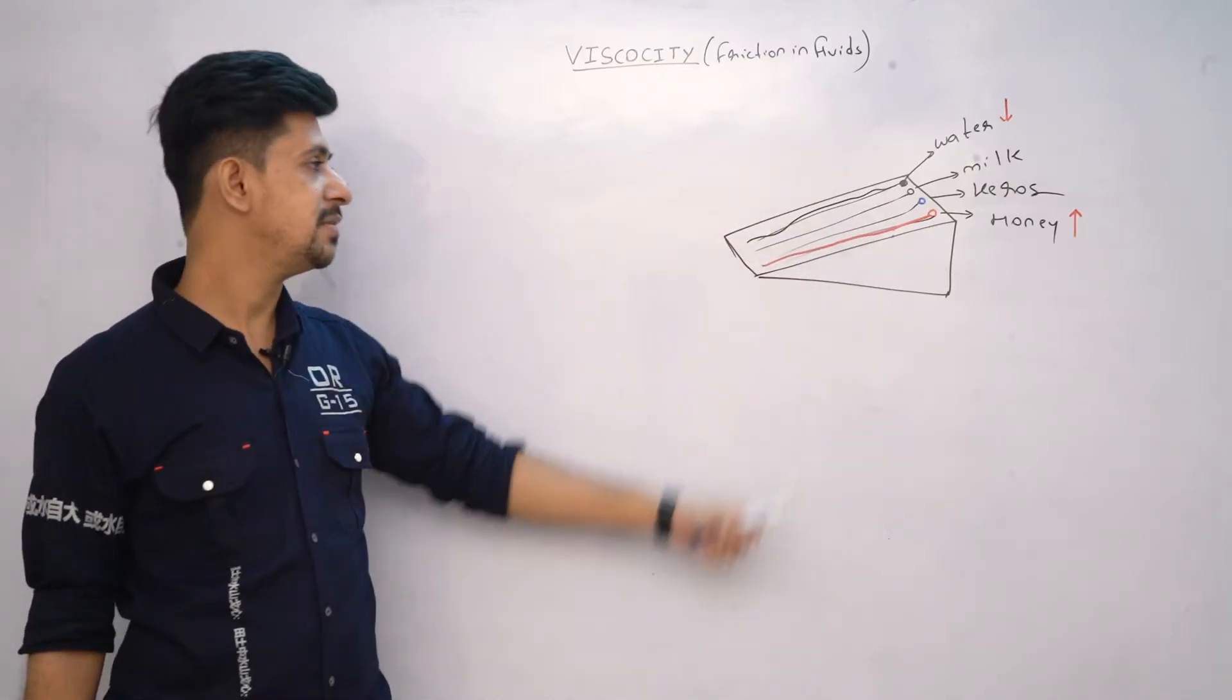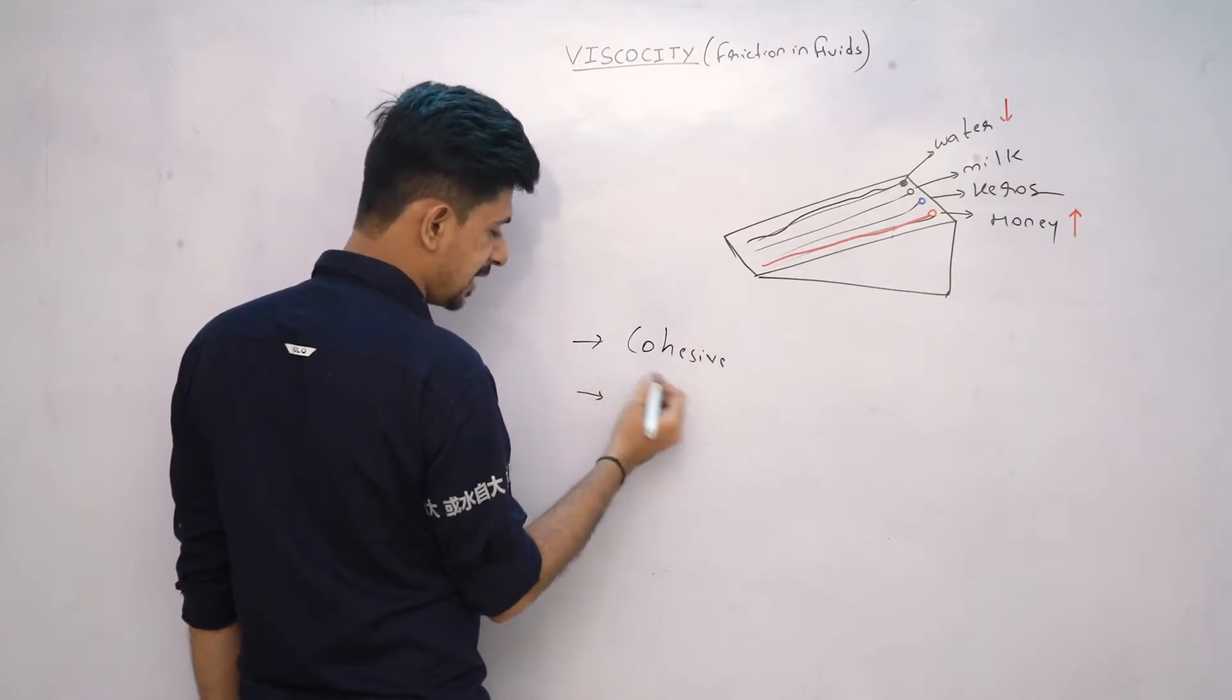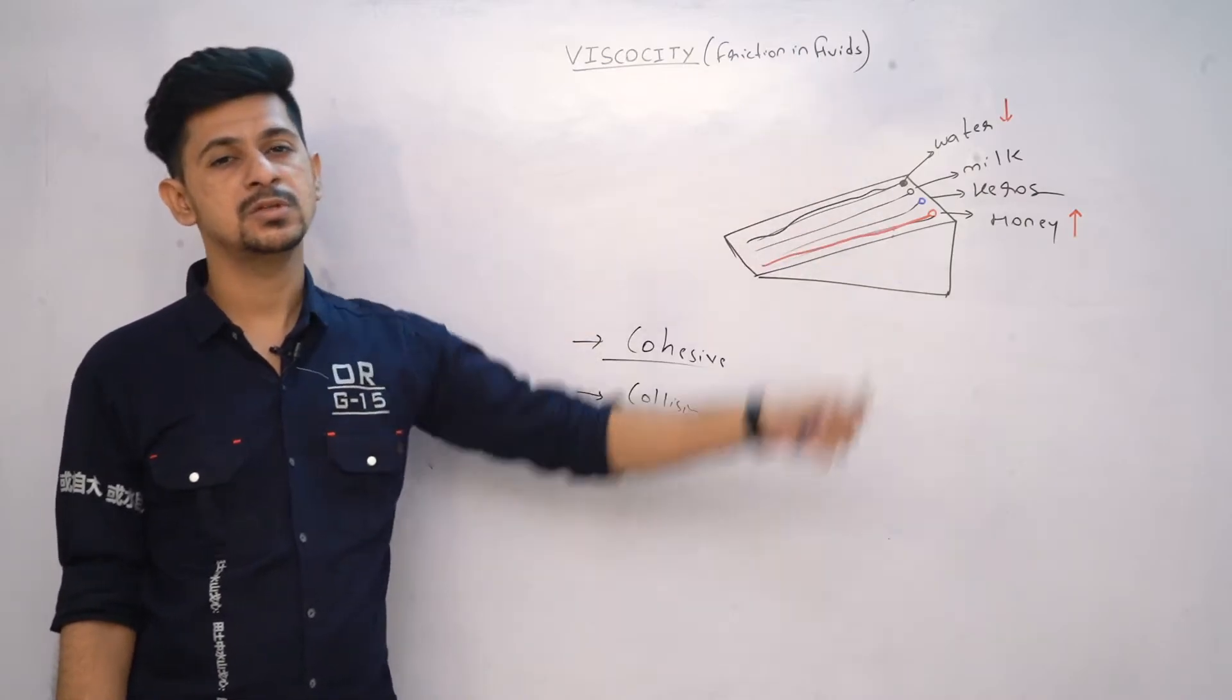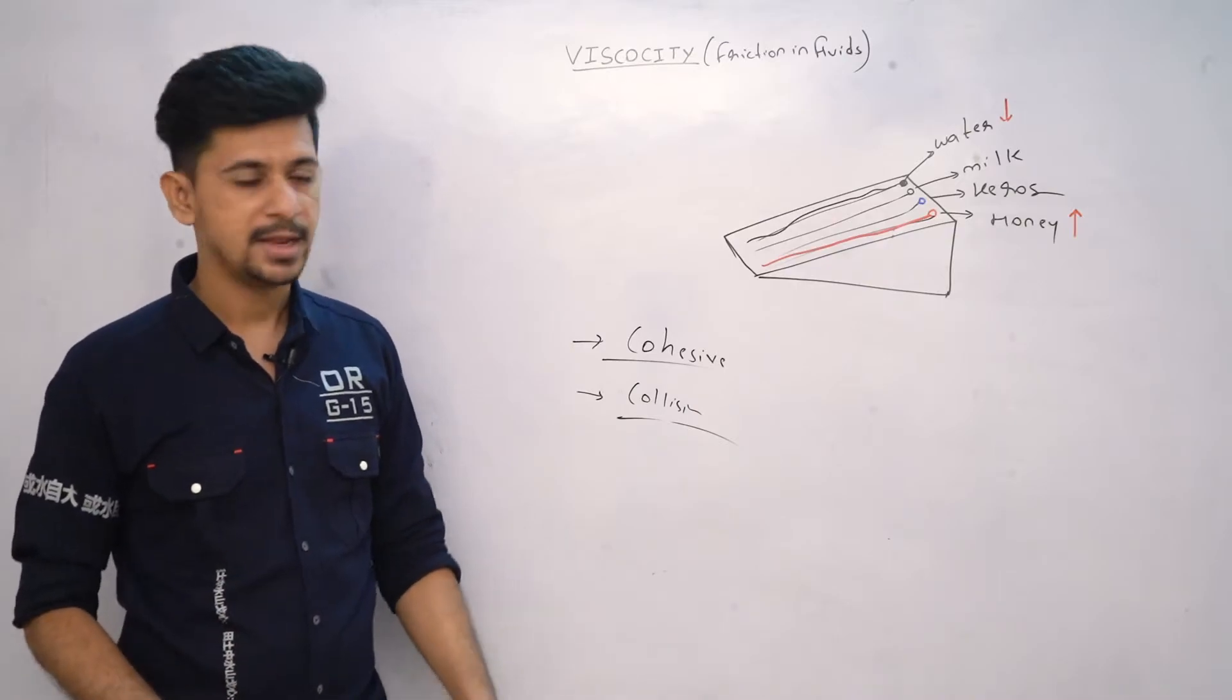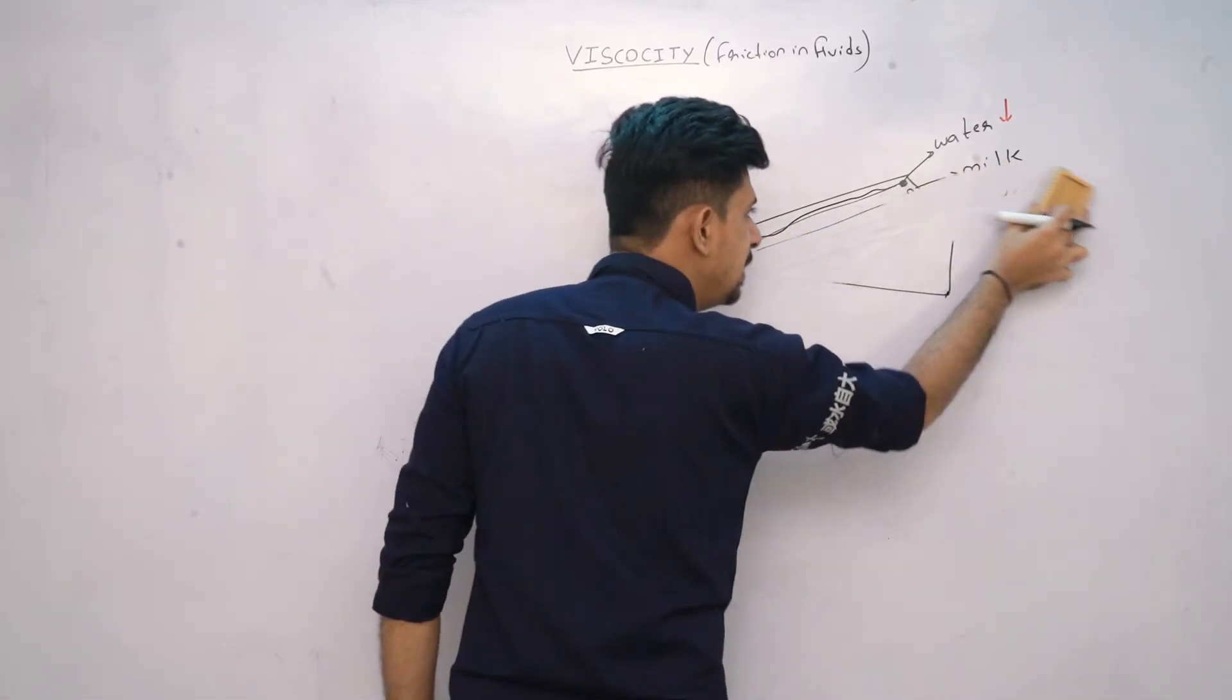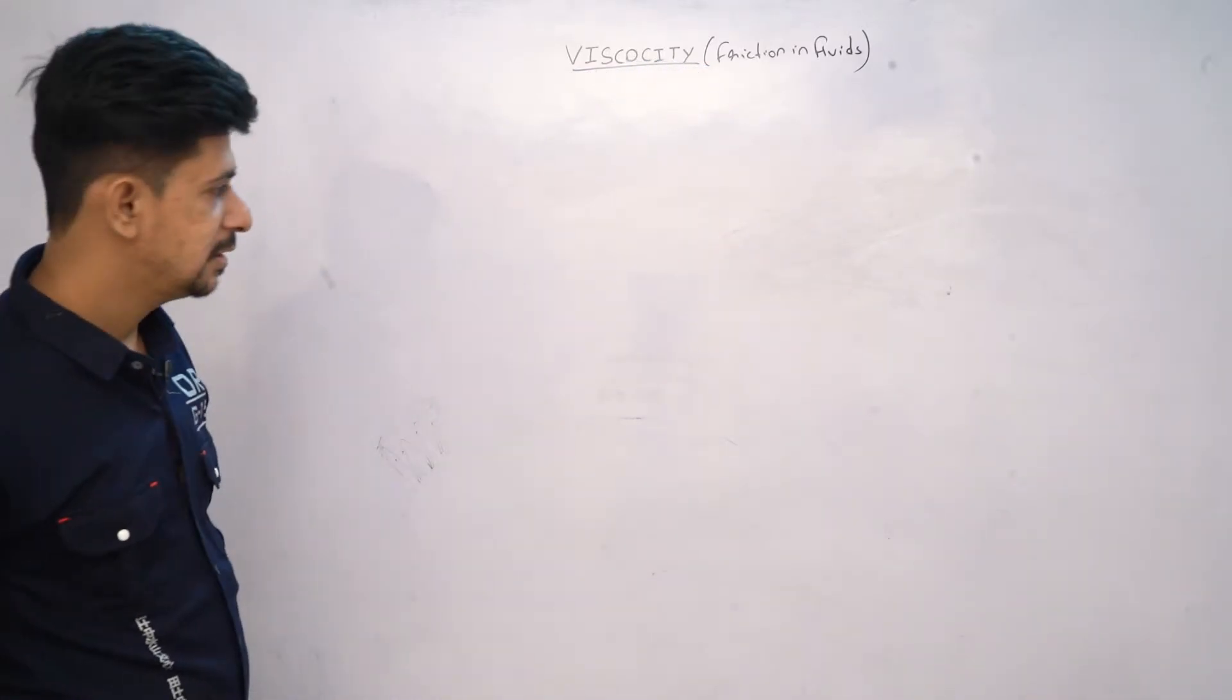In liquids it is due to cohesive force, and in gases it is due to collision of gas molecules. So simply, what is viscosity? Nothing but friction in fluid when the fluid flows and contacts the surface - that is what we call viscosity. Let me give you a few more examples why viscosity is important.